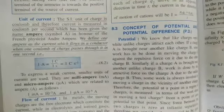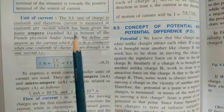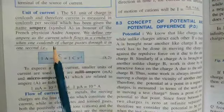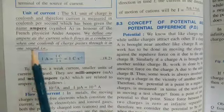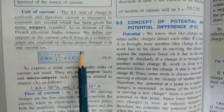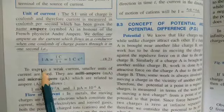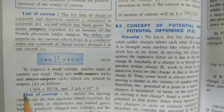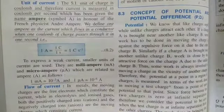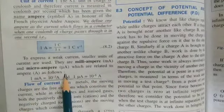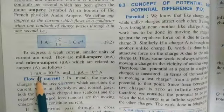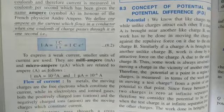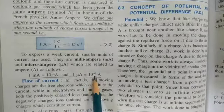The unit of current: the SI unit of charge is coulomb, and therefore current is measured in coulomb per second, which has been given the name ampere, symbol A, in honor of the French scientist Ampere. We define 1 ampere as a current which flows in a conductor when 1 coulomb of charge passes through it in 1 second. Smaller units of current are milliampere (mA) and microampere (μA), where 1 milliampere equals 10 to the power of minus 3 ampere and 1 microampere equals 10 to the power of minus 6 ampere.